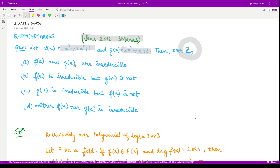They are asking over Z₃ what is the nature of these polynomials? Are they irreducible or not? Out of these four options we need to suggest one correct option. So, let us see the behavior of this polynomial f(x) and this polynomial g(x).